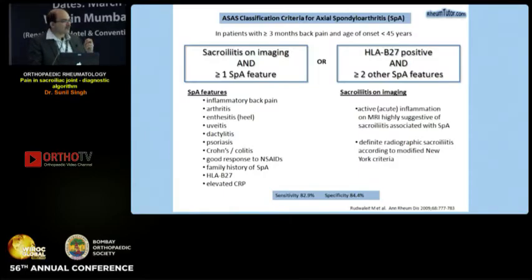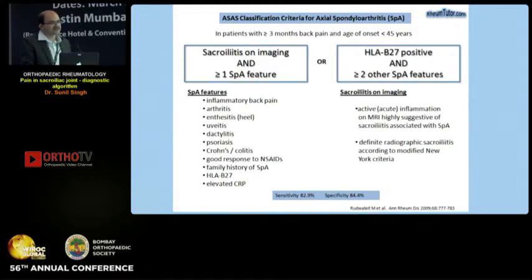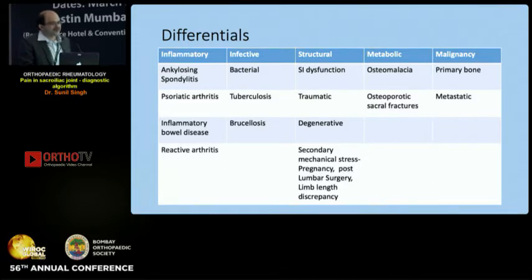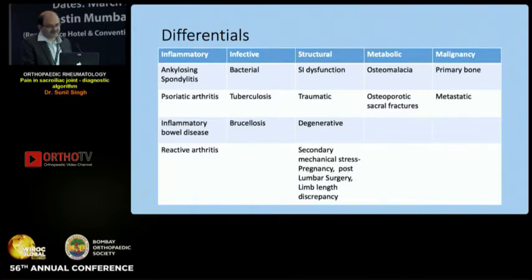Sacroiliitis is also an important feature of the classification criteria for axial spondyloarthritis — you just need one more SpA feature to classify the patient as axial SpA. However, sacroiliac joint involvement does not automatically mean spondyloarthritis. There are several differentials ranging from infective etiology to structural and bony causes, and one must carefully exclude these before making a diagnosis of inflammatory sacroiliitis.